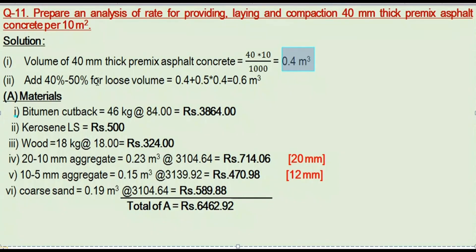We add 40 to 50% extra for loose material. The finished quantity is 0.4 meter cube. Adding approximately 42% extra for loose material ingredients gives us a loose volume of 0.6 meter cube.